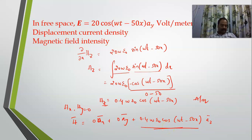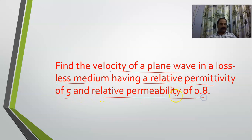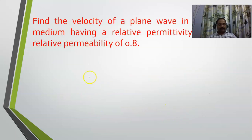We have understood how to solve this type of problem. Moving on to problem number 2: find the velocity of a plane wave in a lossless medium having a relative permeability of 0.8 and relative permittivity of 5. We know that v = 1/√(με) = 1/√(μ₀μᵣε₀εᵣ). Writing it clearly: 1 divided by the square root of μ₀ × μᵣ × ε₀ × εᵣ.